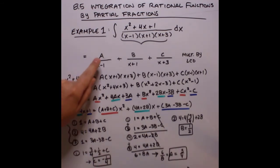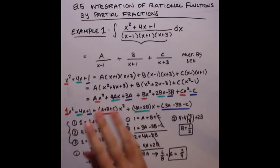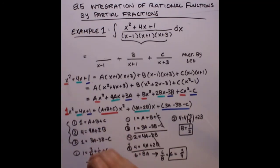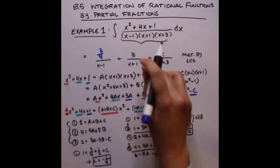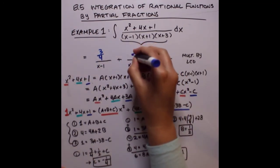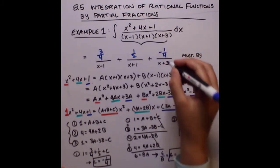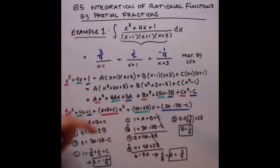All of that algebra was to find A = 3/4, B = 1/2, and C = negative 1/4, which we plug right back into the partial fraction form of the integrand. The algebra part is done — now let's work on the integration.